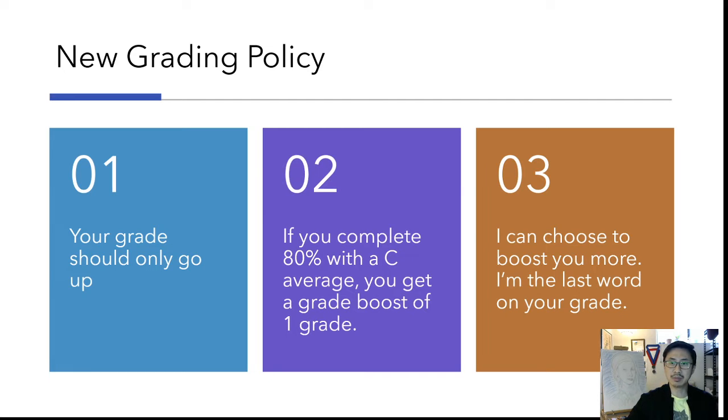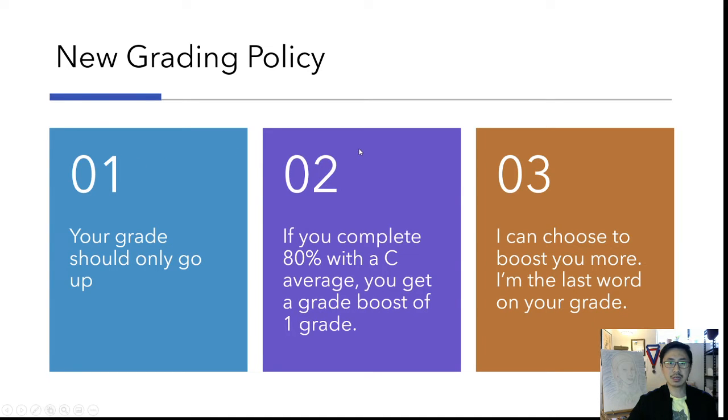So here if you go into Aries, this is what my grade book looks like. So here look, we have your regular grade book, AP Physics 1. This is the one that you had your regular grade during the regular school year, and now you have an extra category called AP Physics 1 Remote Learning.